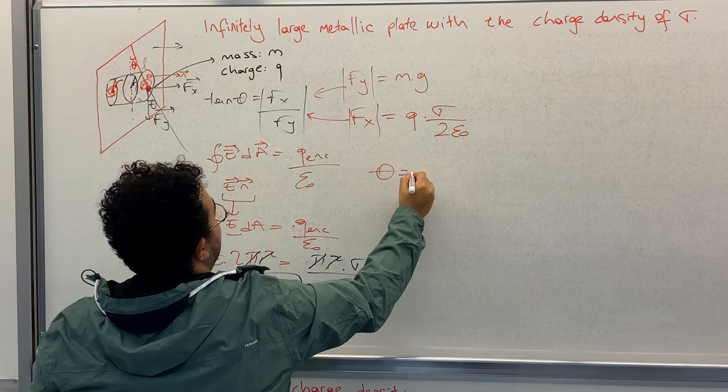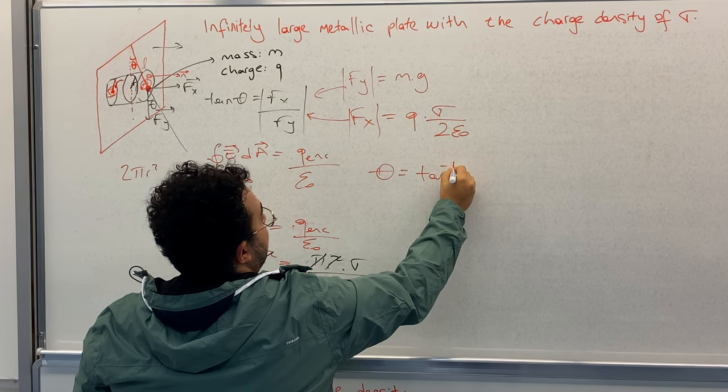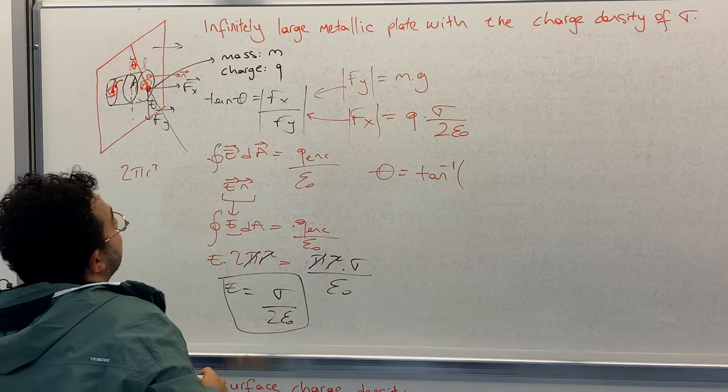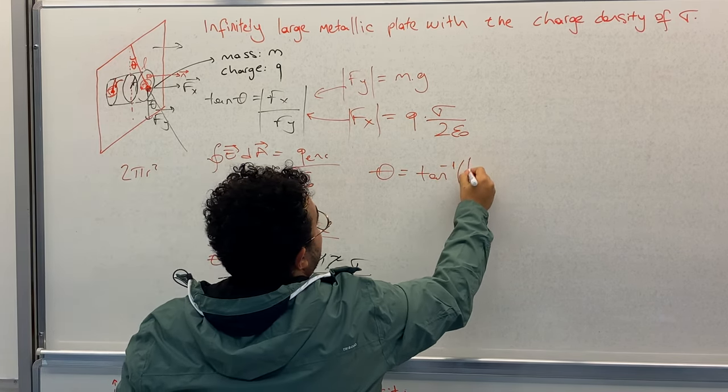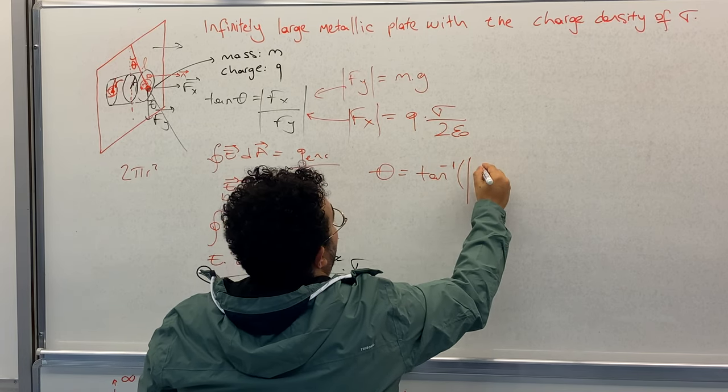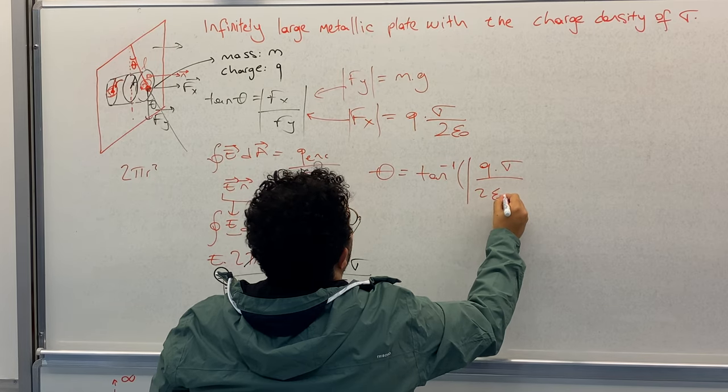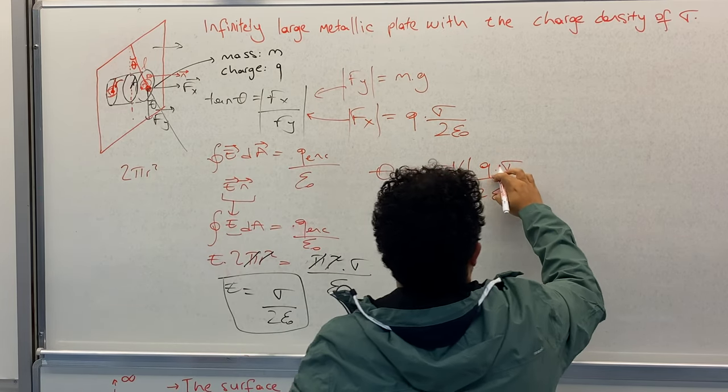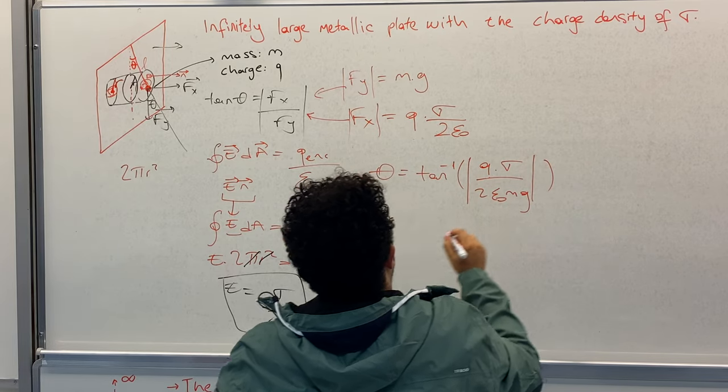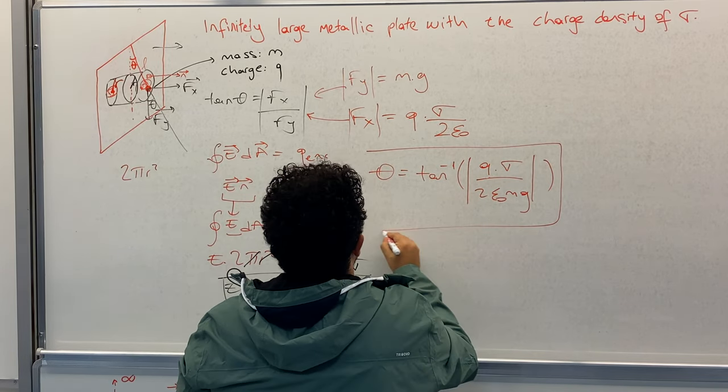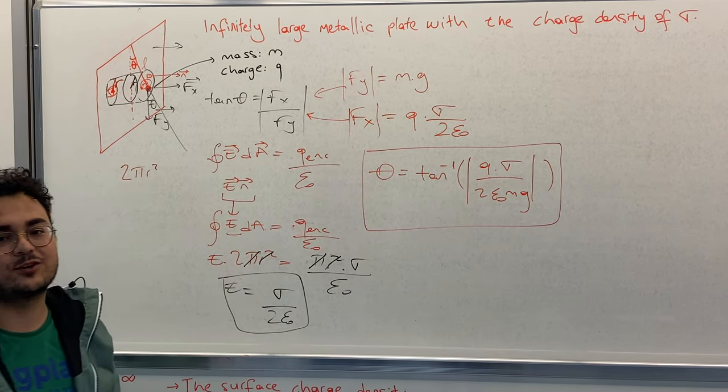So θ equals to tan⁻¹ of qσ over 2ε₀mg. This is the answer. Thank you.